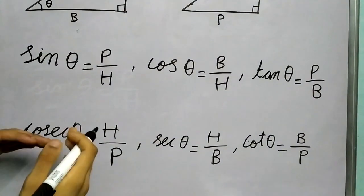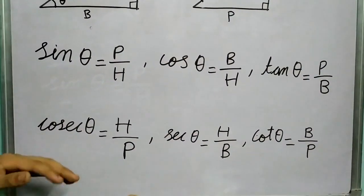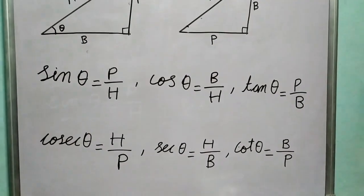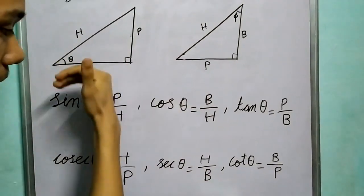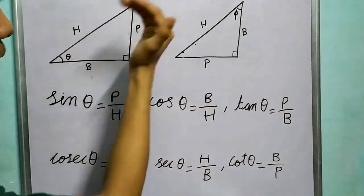And then you have three more: cosec θ is hypotenuse upon perpendicular, sec θ being hypotenuse upon base, and cot θ being base upon perpendicular.